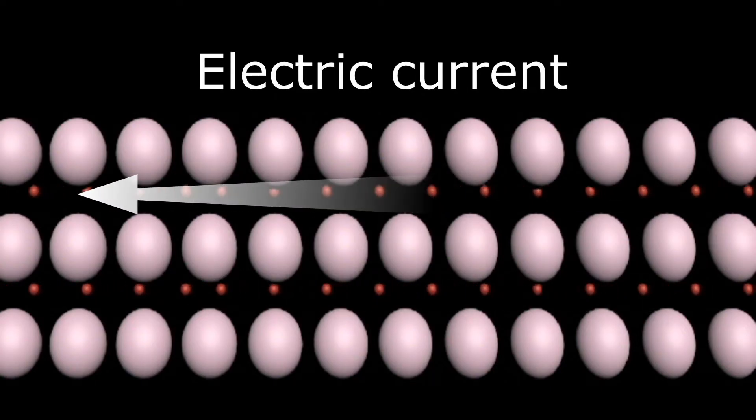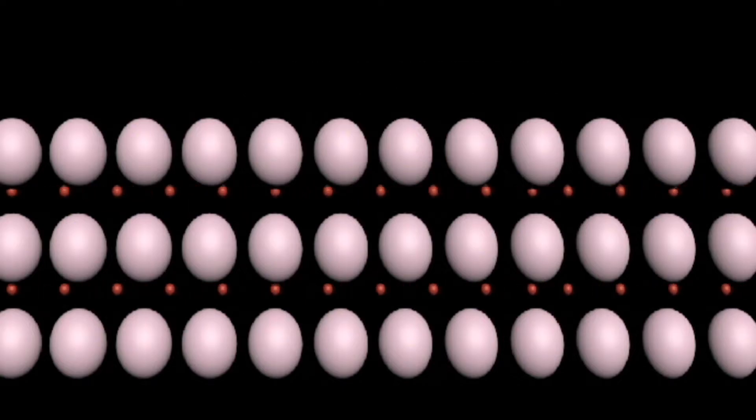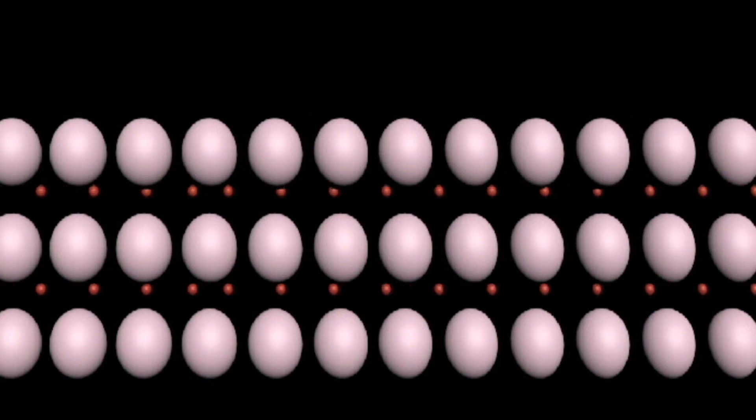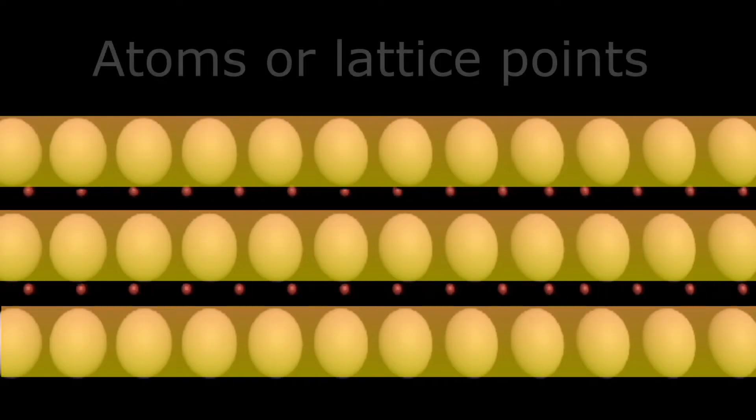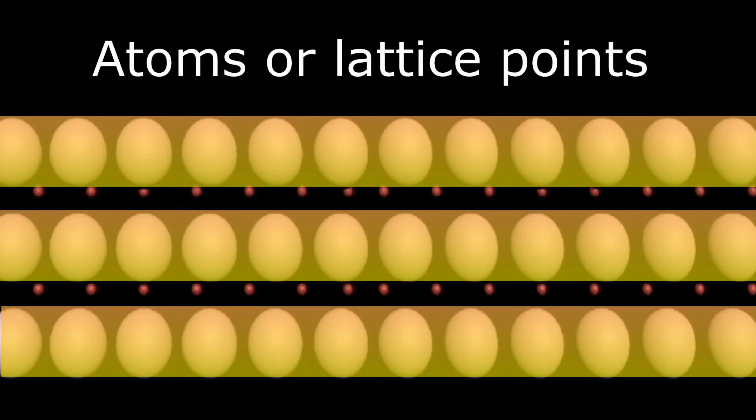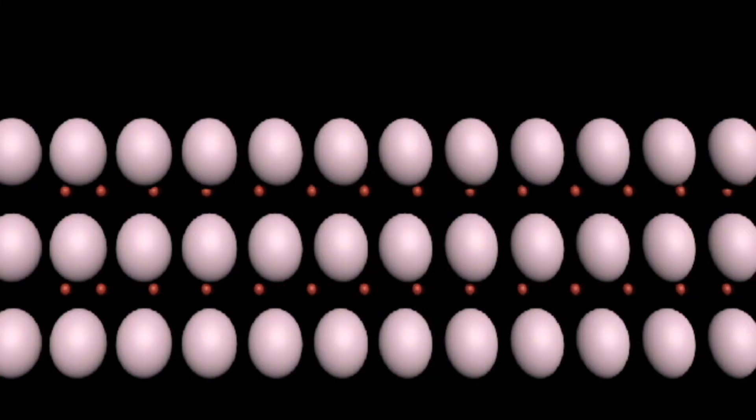Electrons move opposite to the direction of the applied electric field, each electron pushing the other by force of repulsion. At normal or low temperatures, these atoms or lattice points are at fixed positions, so electrons can move easily between them.